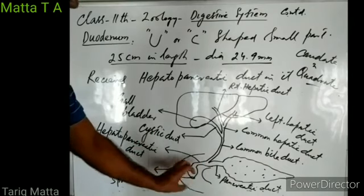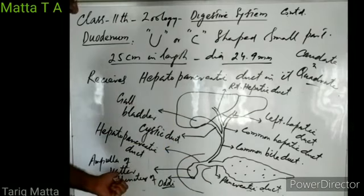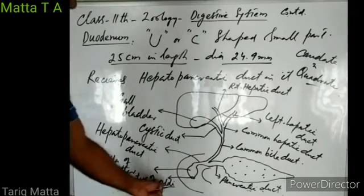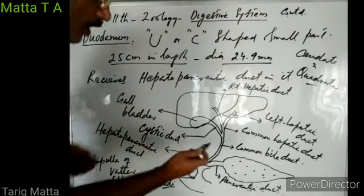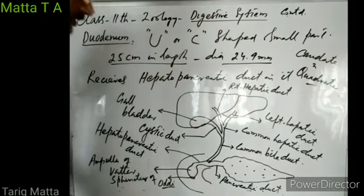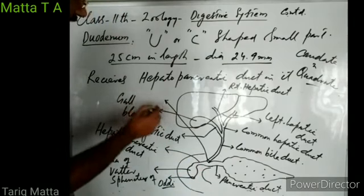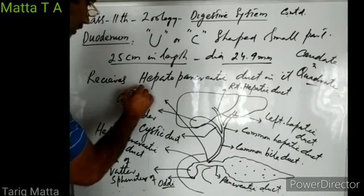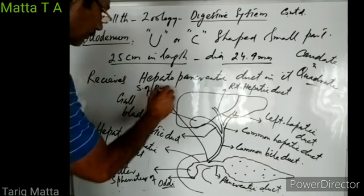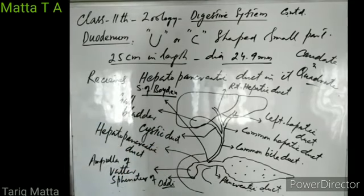This hepatopancreatic duct, before opening into the duodenum, dilates to form an ampulla-like structure known as the ampulla of Vater, which opens into the duodenum through a sphincter valve. At the base of the common bile duct there is another sphincter known as the sphincter of Boyden, which regulates the amount of bile released into the hepatopancreatic duct.